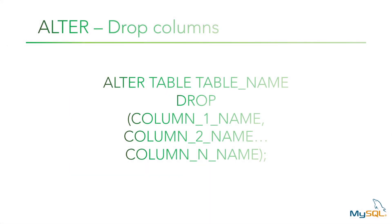The alter command can also be used to drop columns from a table. To drop a column, type the table name after the alter table command. You then use the drop keyword, open parenthesis, and type in the names of the columns you would like to drop. You only need to include the parenthesis if you are dropping more than one column.